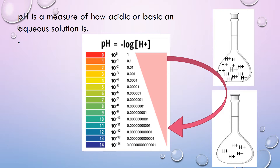As we move from top to bottom on the pH scale, that is from 0 to 14, the hydrogen ion concentration decreases while the pH of the solution increases. pH is inversely related to hydrogen ion concentration. For example, 10 raised to the power 0 equals 1. If the pH is 0, then the hydrogen ion concentration will be maximum at 1 mole per liter. As we move downward, the hydrogen ion concentration decreases.